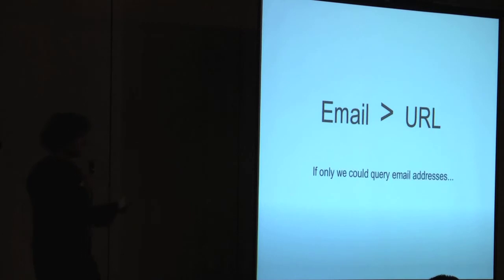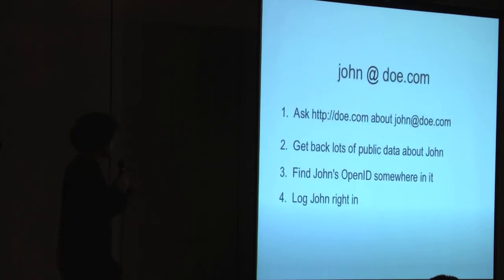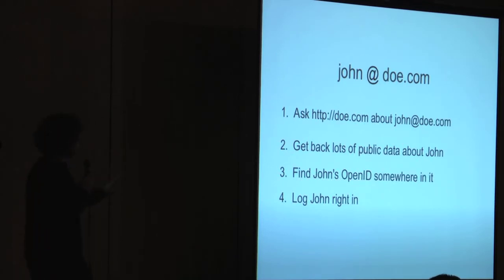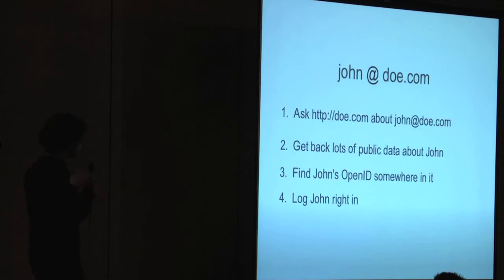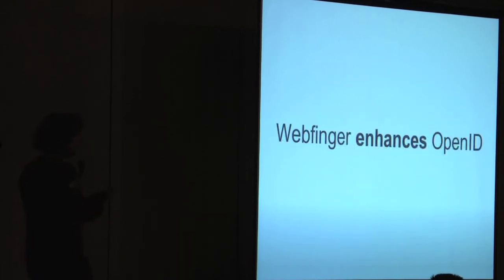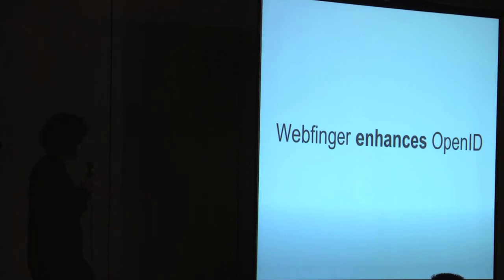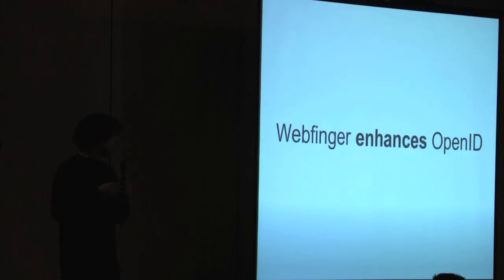What we want to do is make emails not just read-only. We want to look at an email — say, john@doe.com — and get back lots of data about that person. It's not really important what data we get, except that it has an OpenID somewhere in it, so we can find that and then log them in. In that way, WebFinger is not about replacing OpenID. Hopefully, WebFinger as a name doesn't even exist at all — it's just about enhancing other services like OpenID. It's about making that URL invisible and letting people do anything they want with their email address.